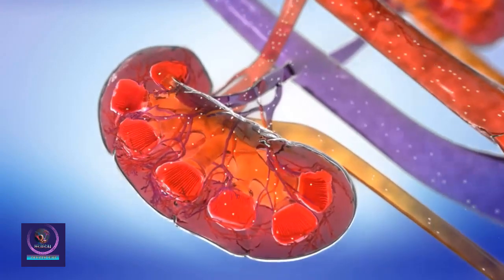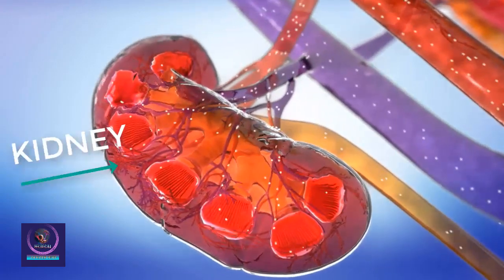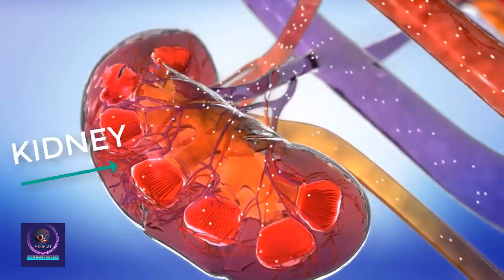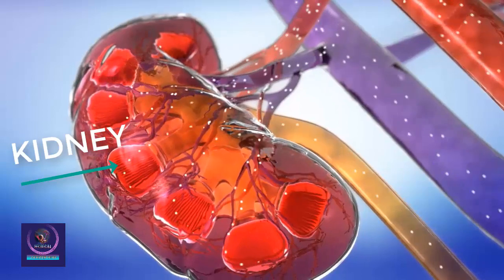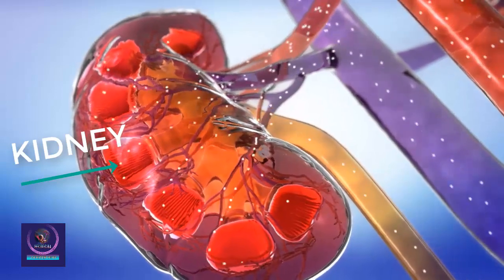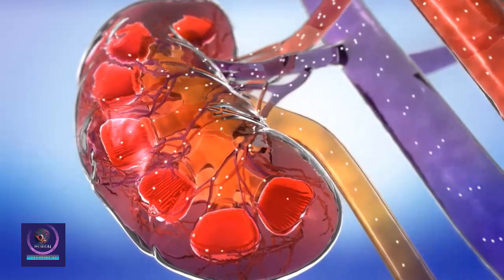Your kidneys act as a filtration system, processing blood to produce waste and excess fluid, which are eliminated as urine.